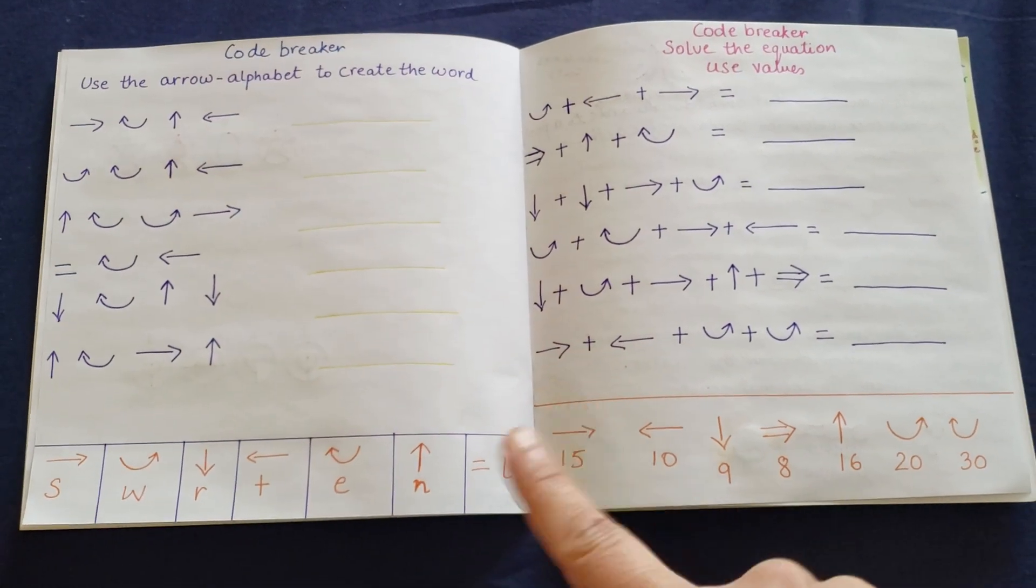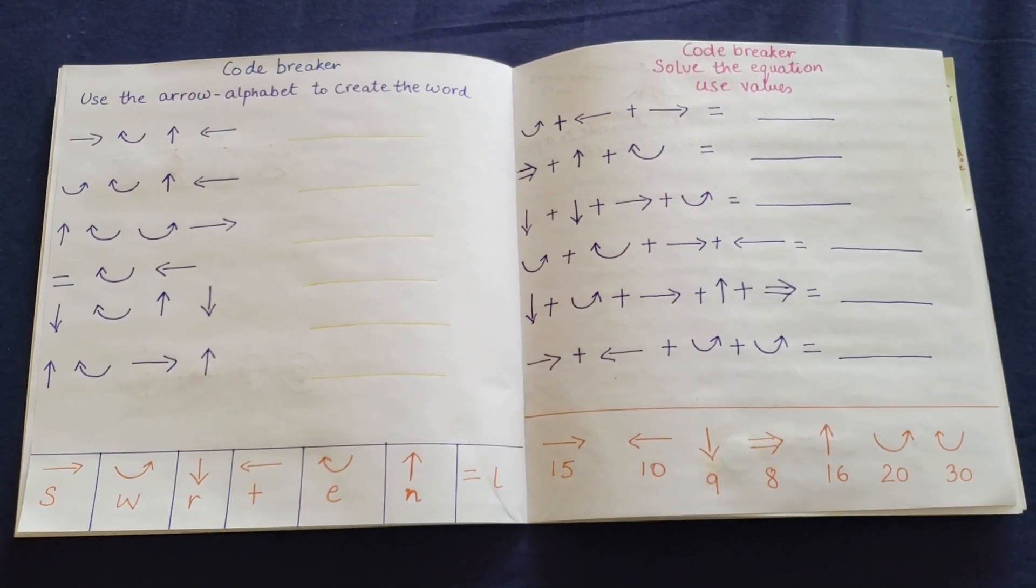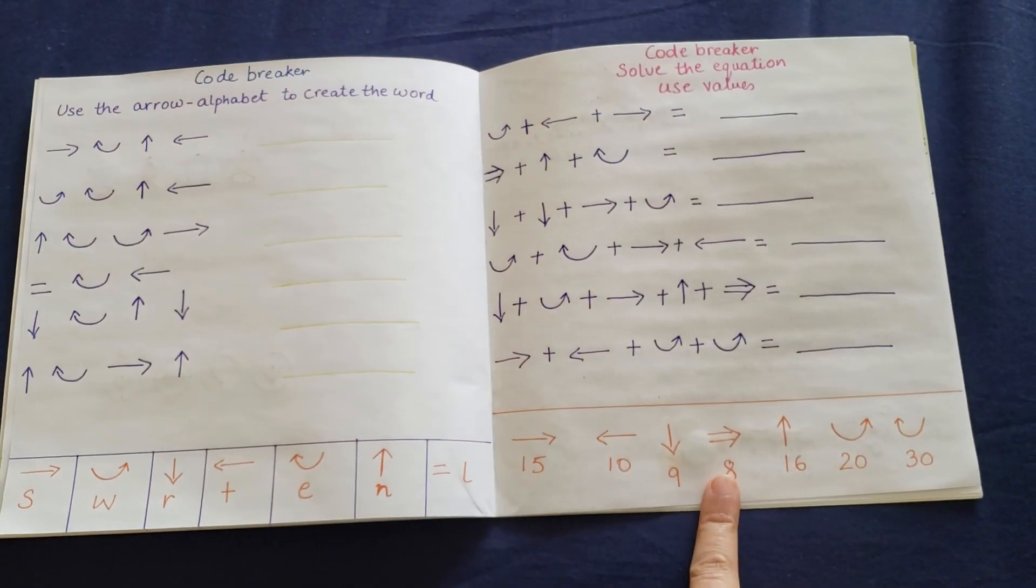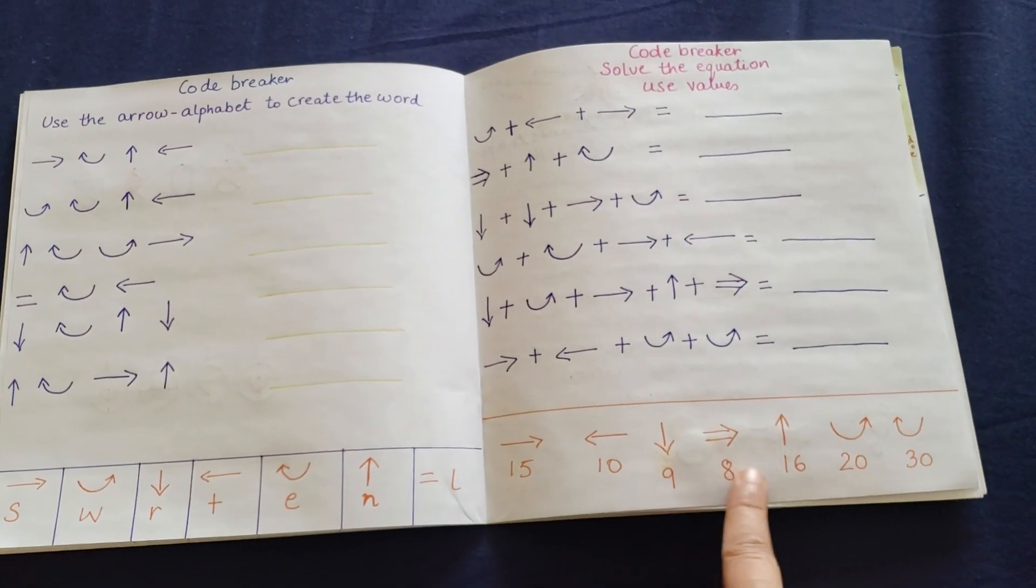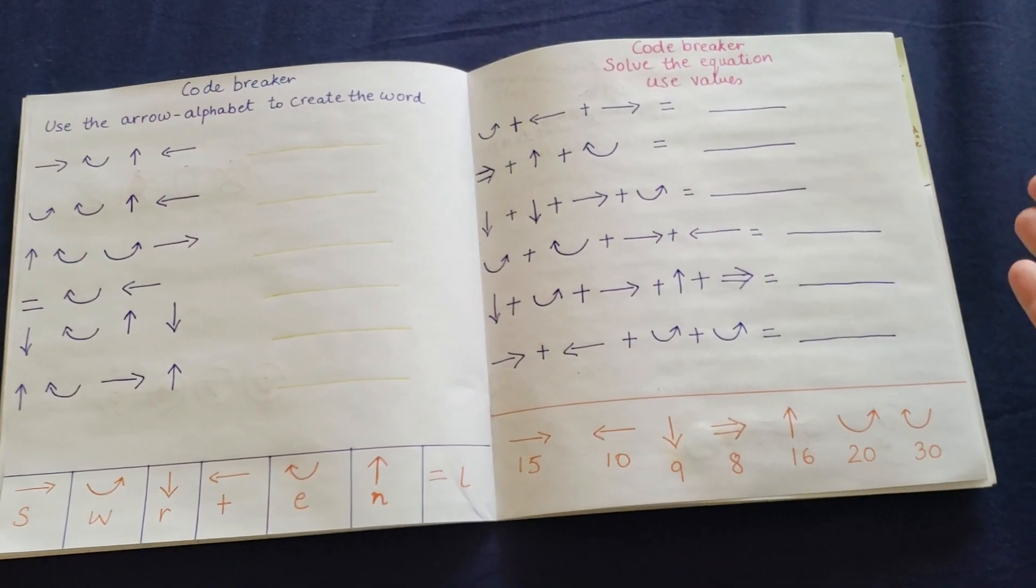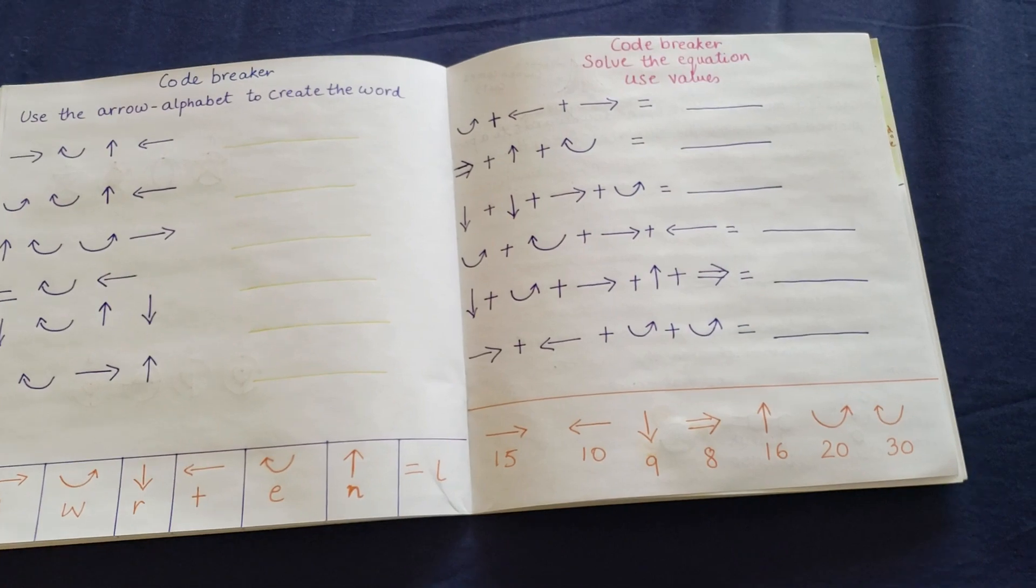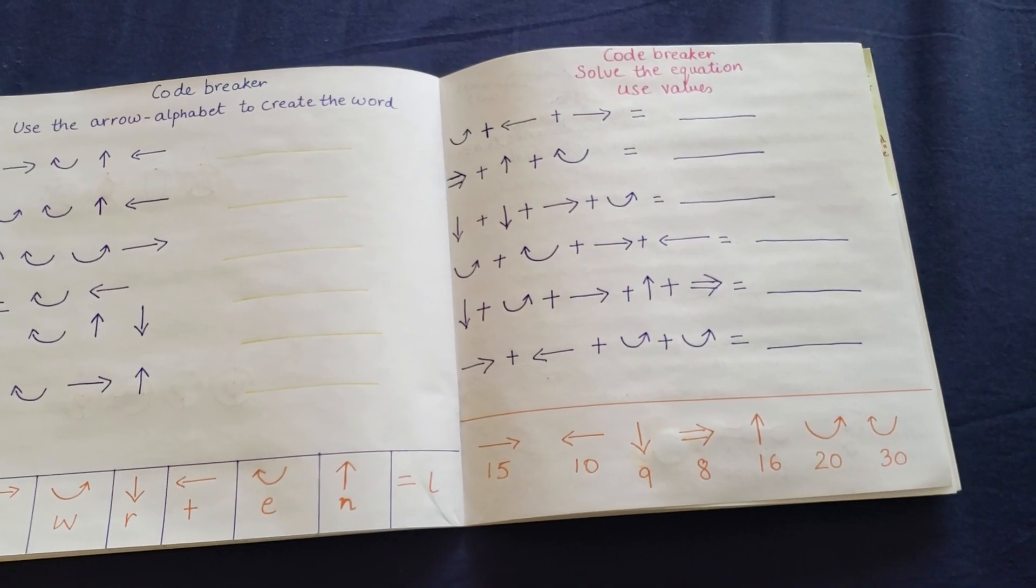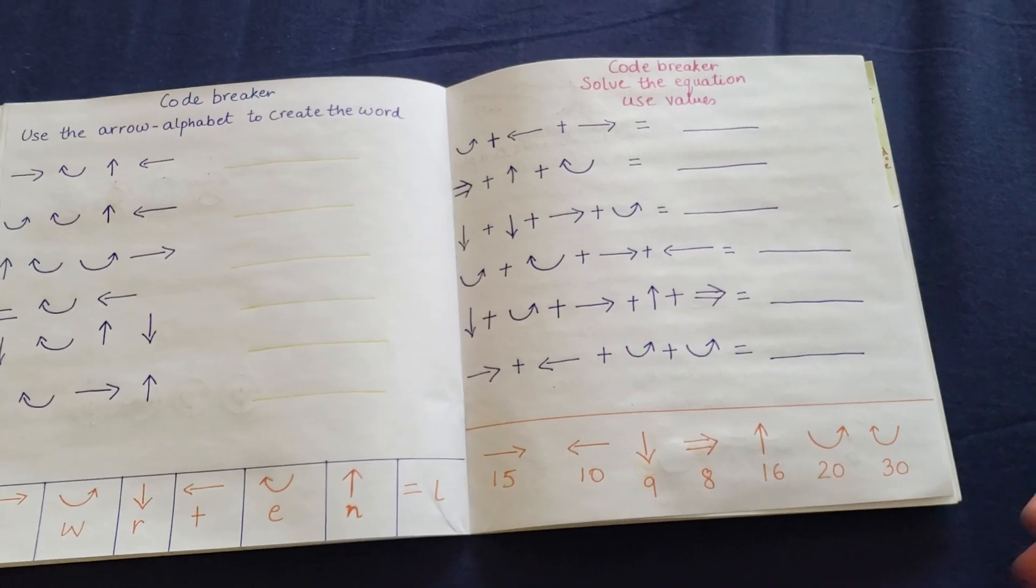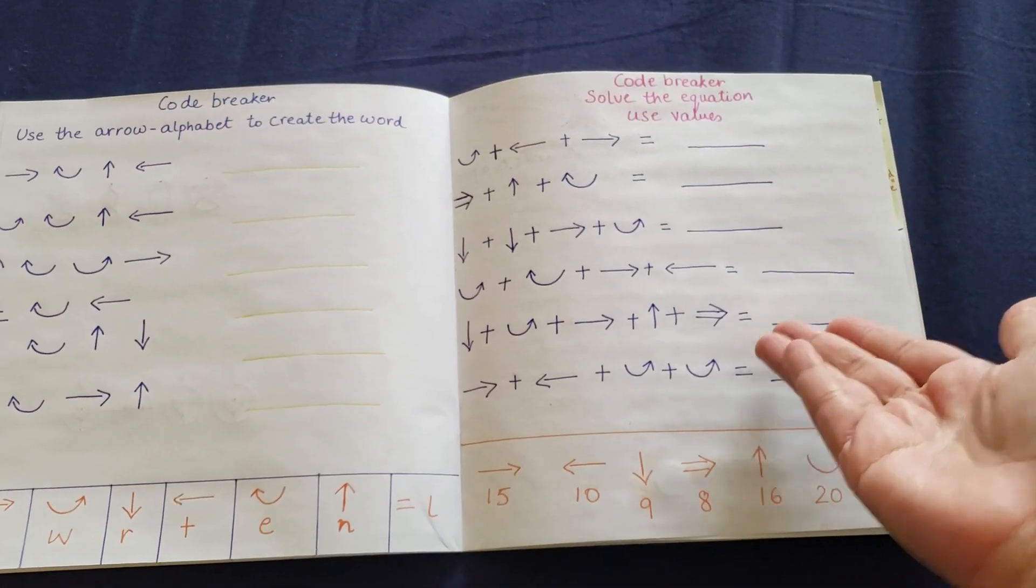Then you have a code breaker. These two activities I've picked up from my code breaking activities, which I've done in the past. First, this is like creating words. This is like solving an equation. You can always, rather than using a plus, you can use a minus, multiplication, division or whatever I think your child can do. You can always add that up. You can always change the numbers, make them more complicated or make them easy, but the coding element remains the same.